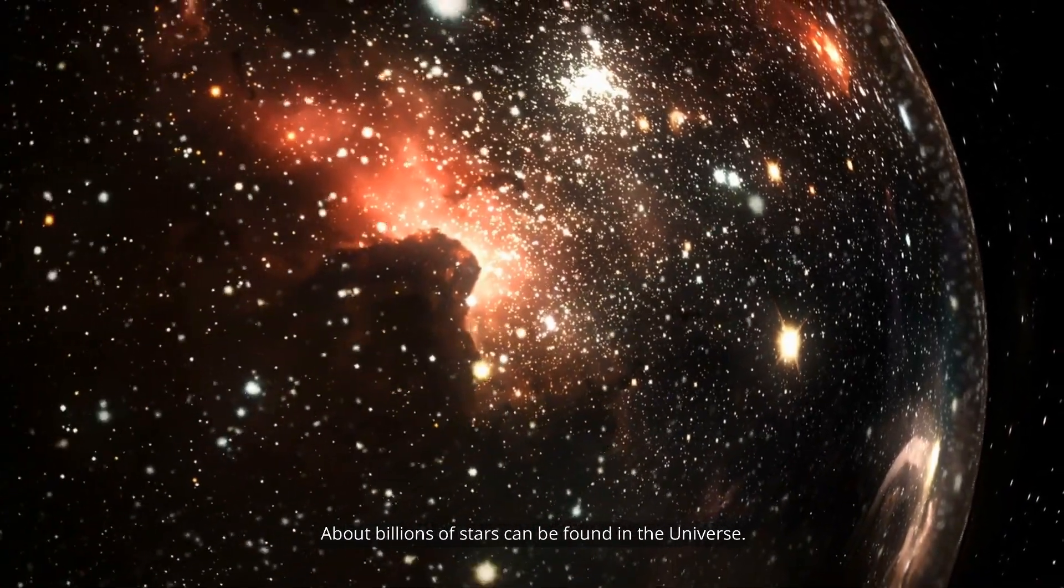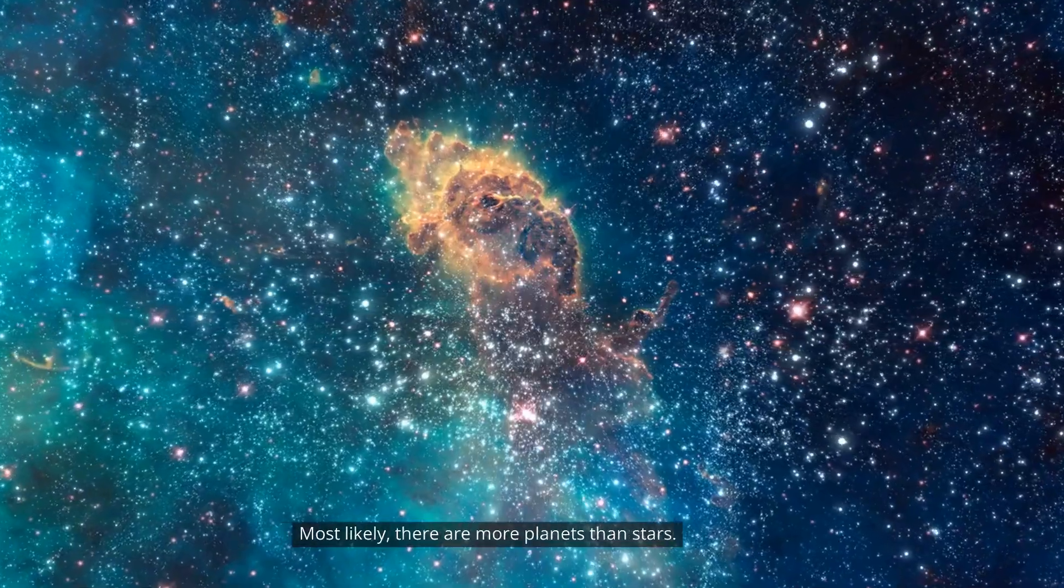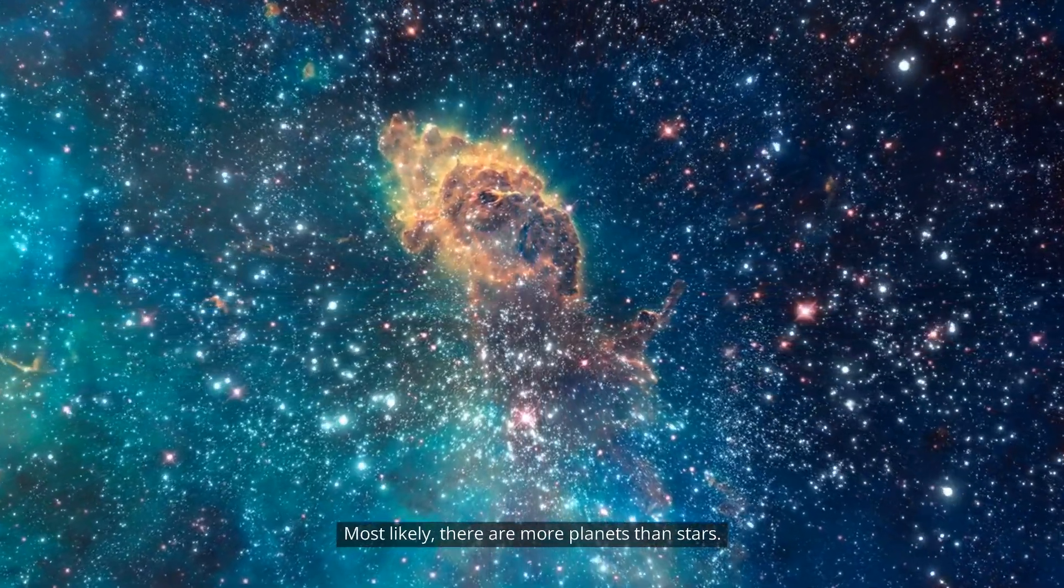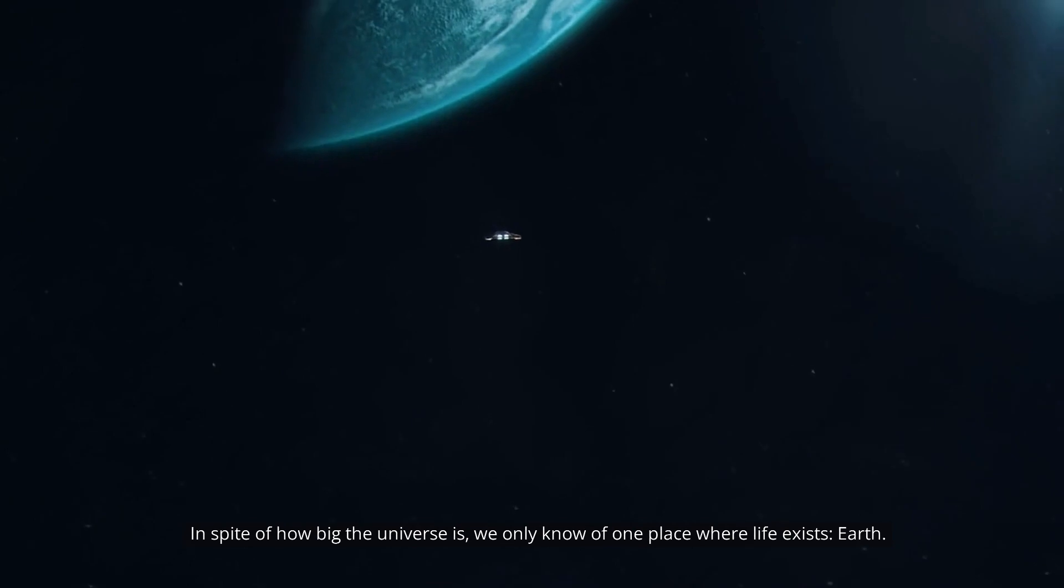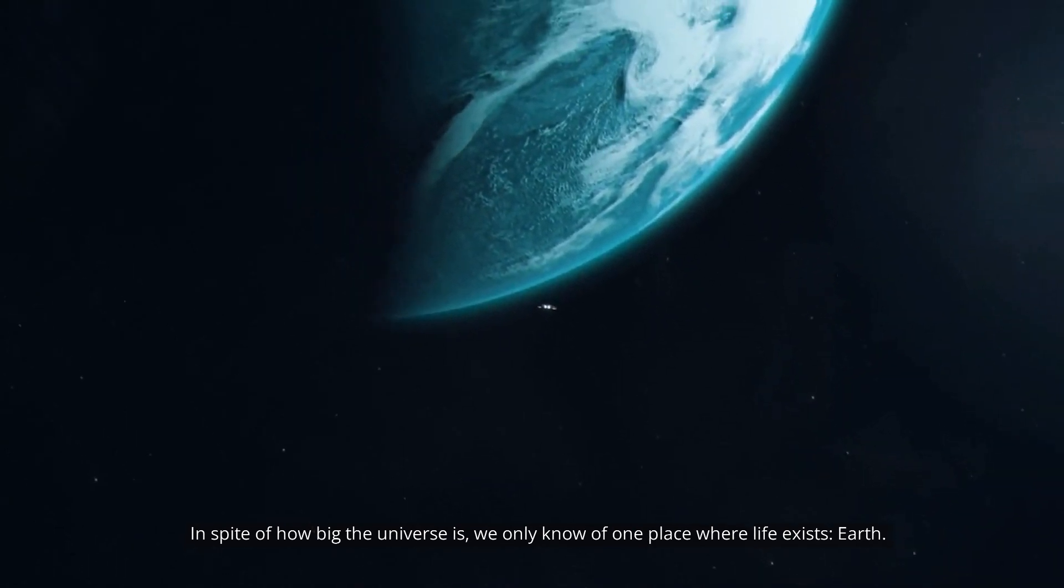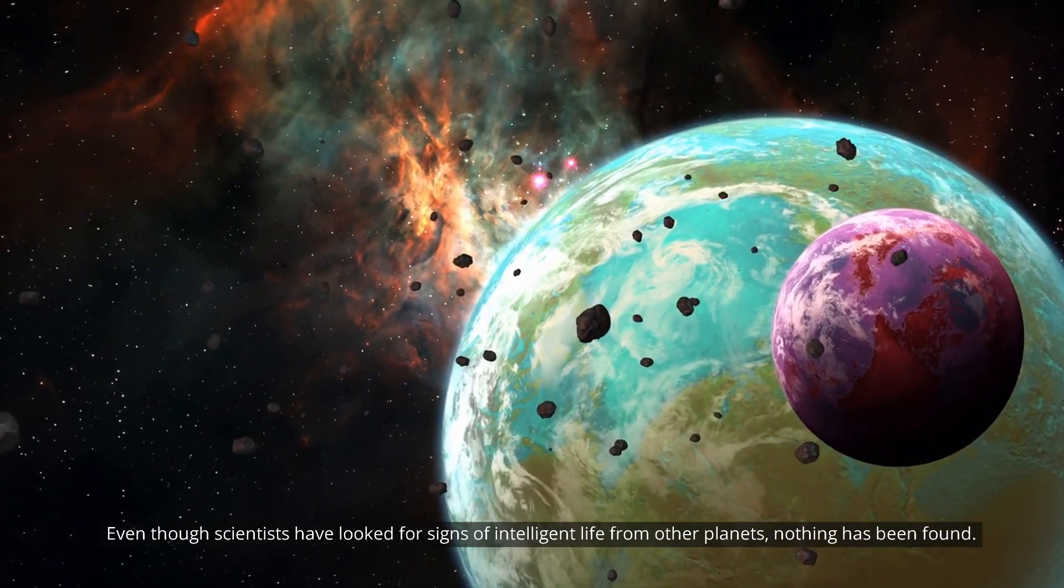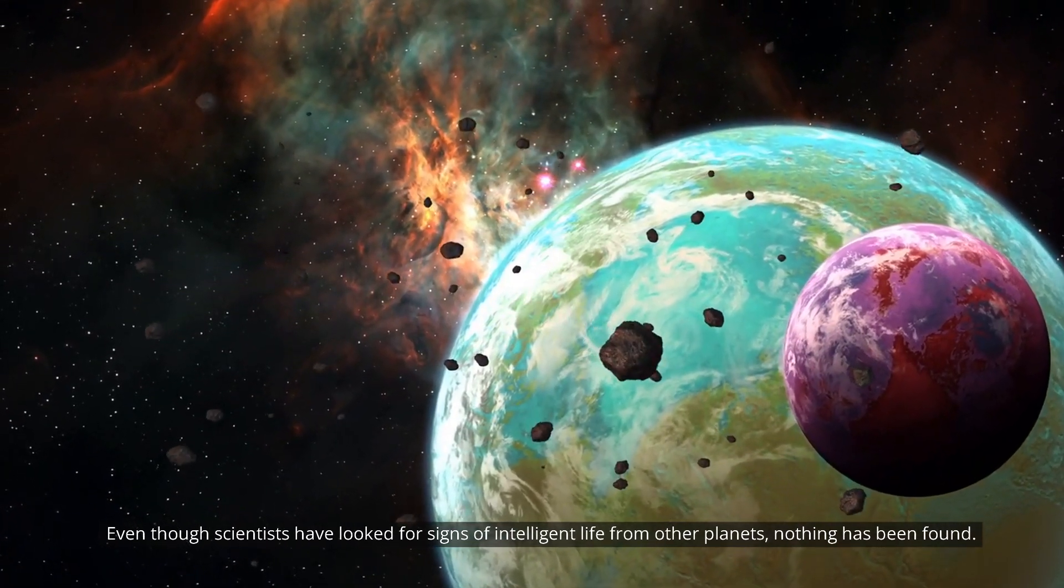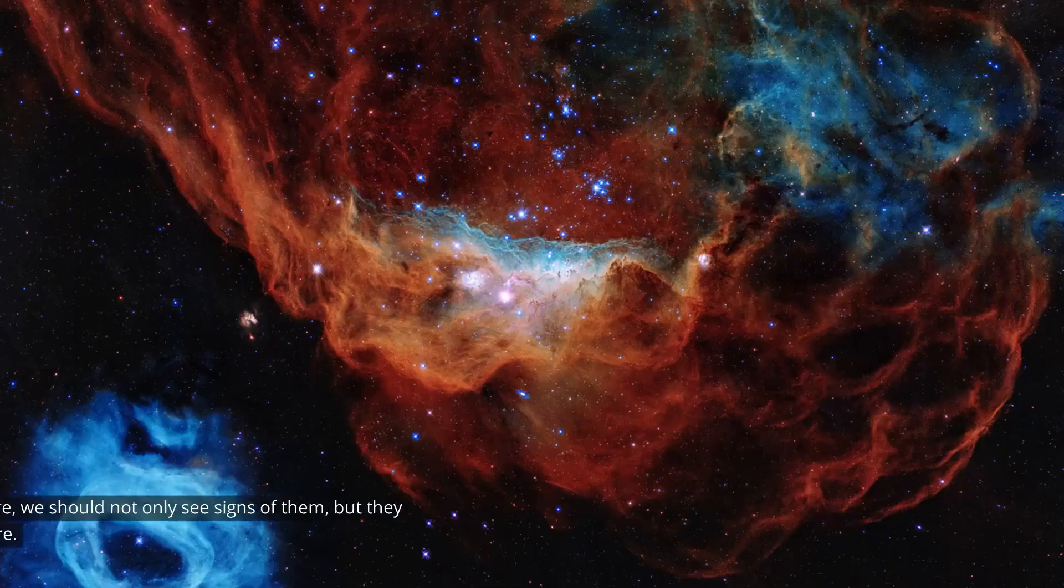About billions of stars can be found in the universe. Most likely, there are more planets than stars. In spite of how big the universe is, we only know of one place where life exists, Earth. Even though scientists have looked for signs of intelligent life from other planets, nothing has been found. In fact, there is a good case that if these kinds of life exist out there, we should not only see signs of them, but they should already be here.